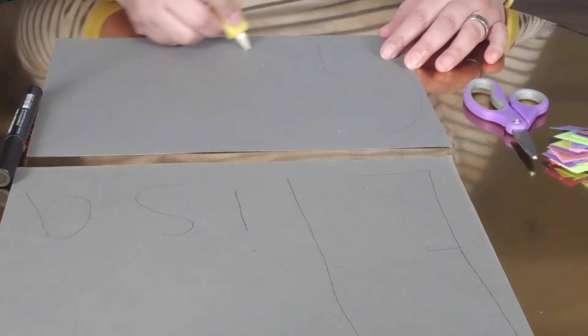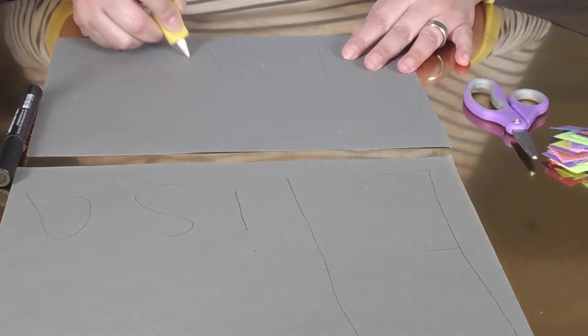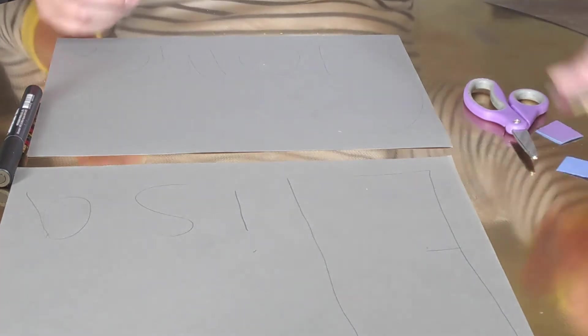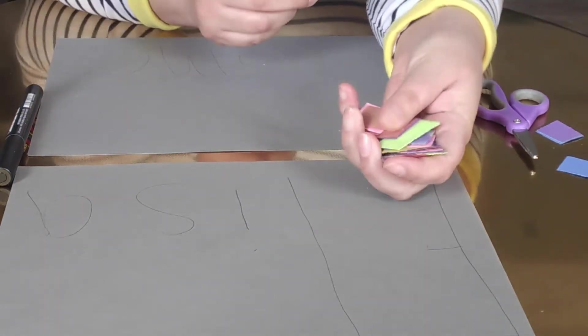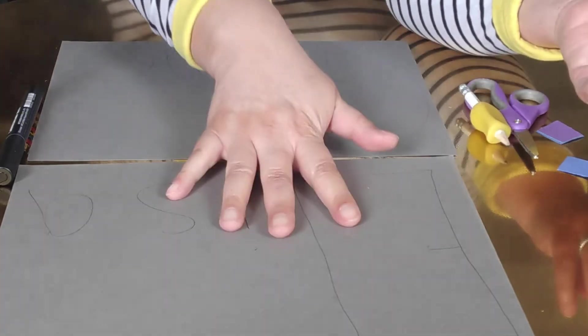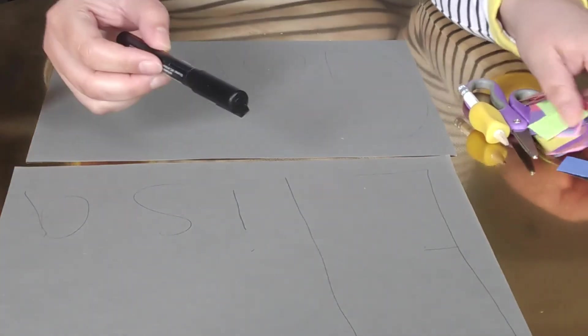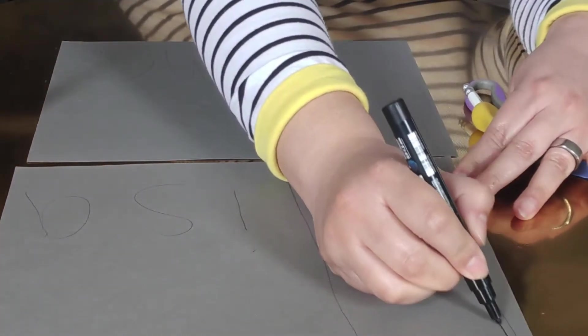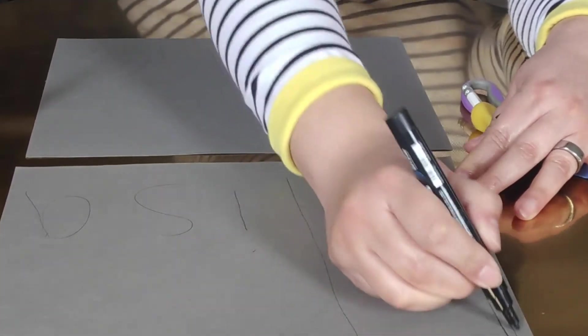And it doesn't have to be precise. We're just spacing it out so that when we glue these on, it will fit on the page. So if the pencil is too light, you can go over it with a marker so that your child can see where they need to paste.